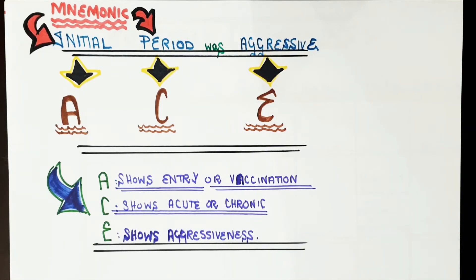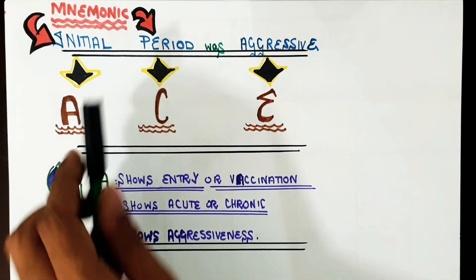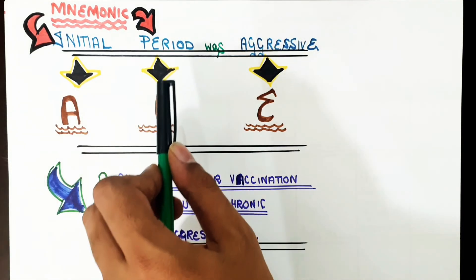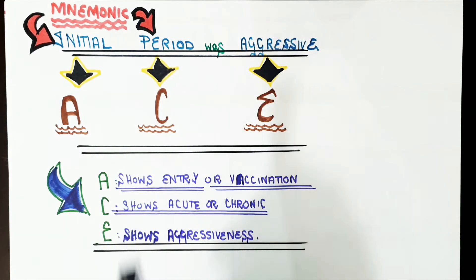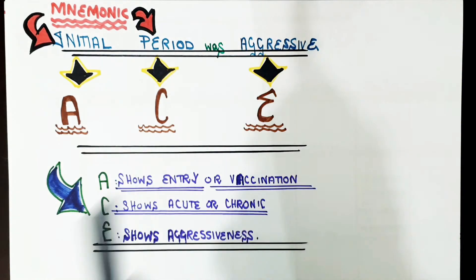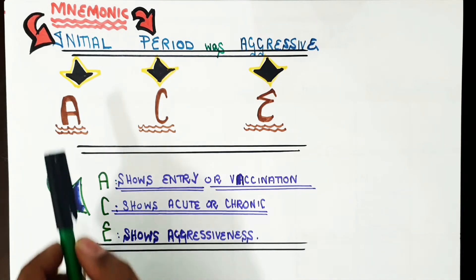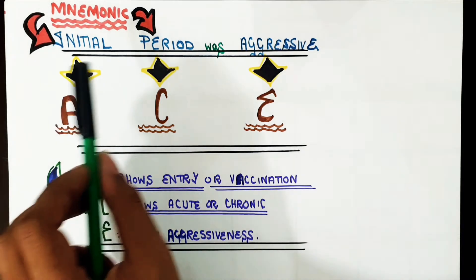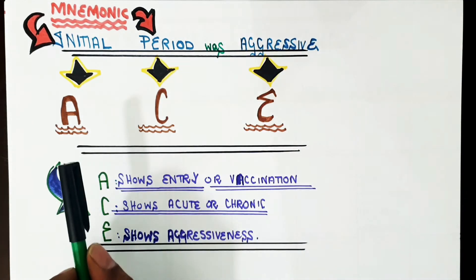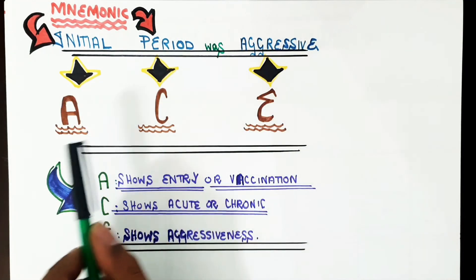Here is an important mnemonic to remember for interpreting Hepatitis B serology results. The mnemonic goes: 'The initial period was aggressive.' 'Initial' gives us A, 'period' gives us C, and 'aggressive' gives us E — forming the word ACE.